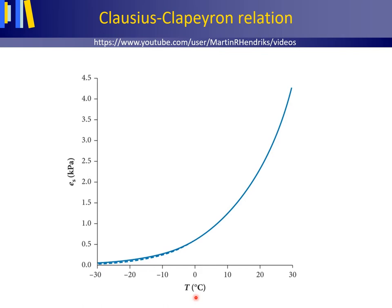Not only does air exert a pressure, but also the water vapor in the air exerts a pressure. We call this the actual vapor pressure, and if the air is fully saturated with water vapor, the saturation vapor pressure. The vapor pressure is usually expressed in kilopascals.